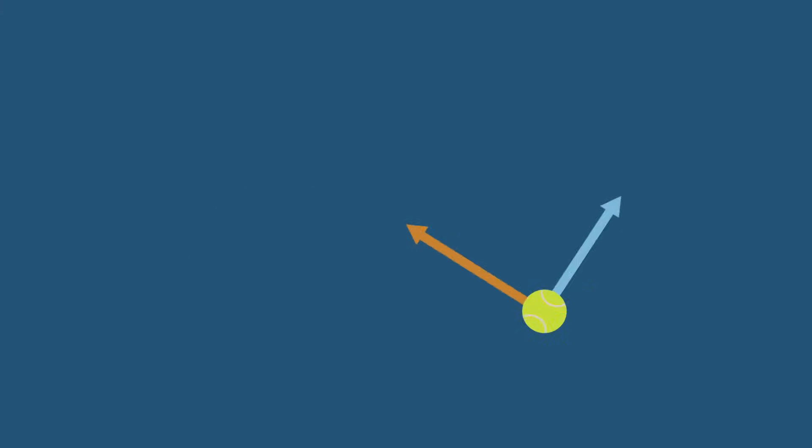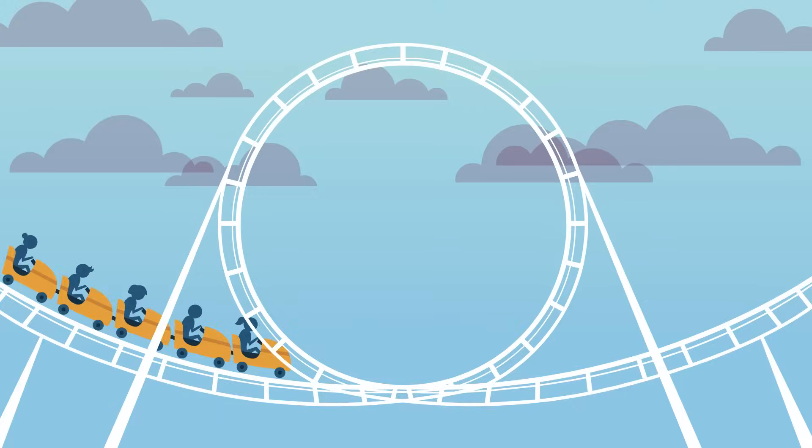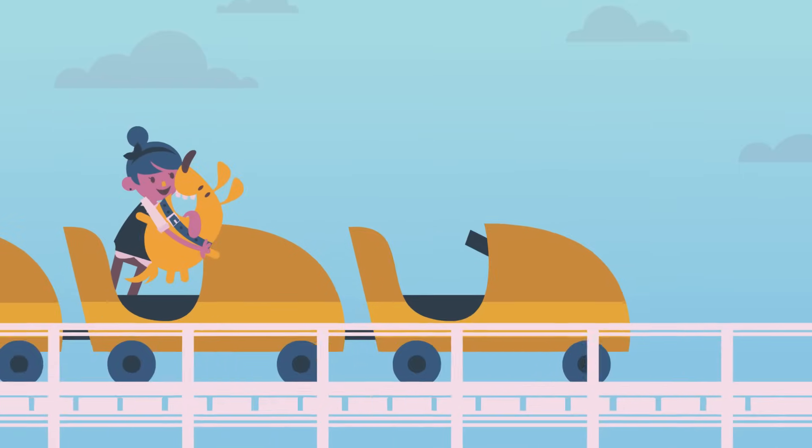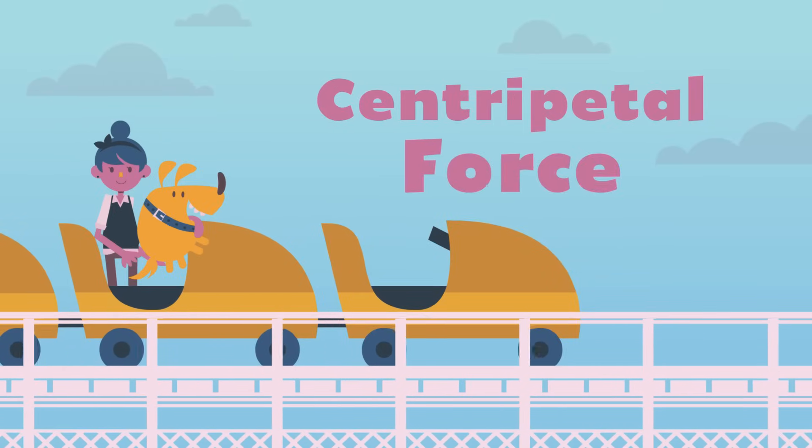This, combined with the ball's velocity, keeps the ball swinging in a circle. The same centripetal force that keeps the tennis ball swinging in a circle also keeps roller coasters on the track as they go through a loop-de-loop. So, the next time you're having a blast on a roller coaster, you can thank the centripetal force.